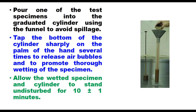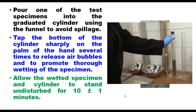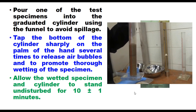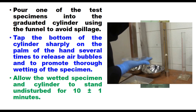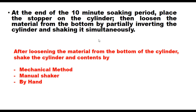Pour one of the test specimens into the graduated cylinder using the funnel to avoid spillage. Tap the bottom of the cylinder sharply on the palm of the hand several times to release air bubbles and promote thorough wetting. Allow the wetted specimen and cylinder to stand undisturbed for 10 minutes. At the end of the soaking period, place the rubber stopper on the cylinder and loosen the material from the bottom by partially inverting and shaking the cylinder simultaneously.